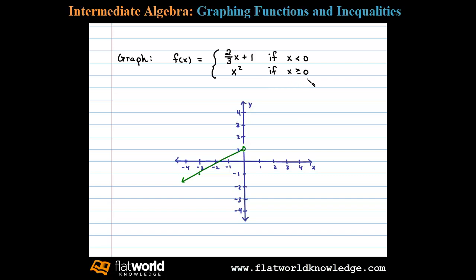For the second piece, the squaring function is only defined for x values greater than or equal to zero. The smallest x value is zero — when I plug in zero, zero squared is zero, and the origin is a point on that graph. If I substitute x equals one we get another point (1, 1). Substituting in x equals two, another point would be (2, 4).